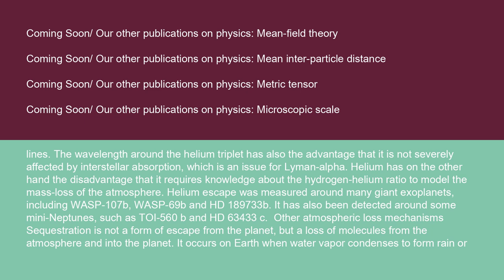Helium escape was measured around many giant exoplanets, including WASP-107b, WASP-69b, and HD 189733b. It has also been detected around some mini-Neptunes, such as TOI-560b and HD 63433c.